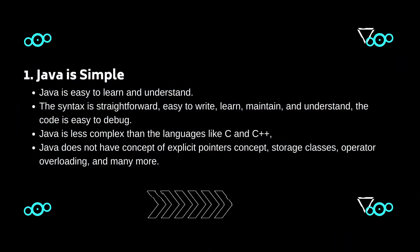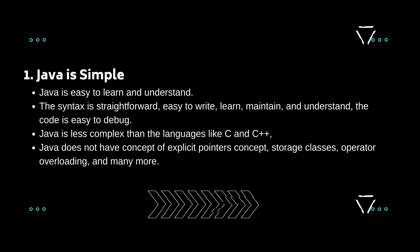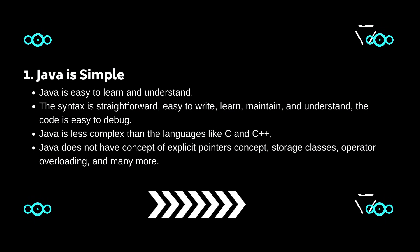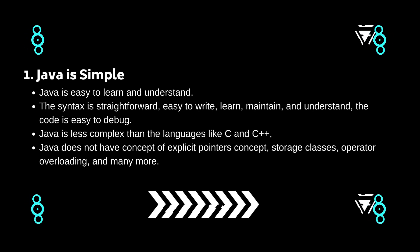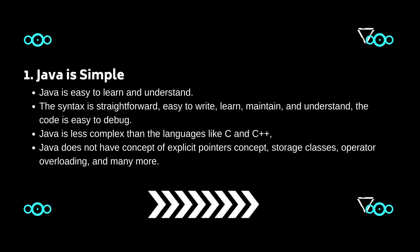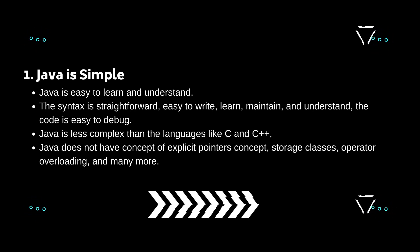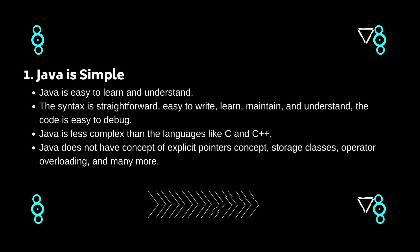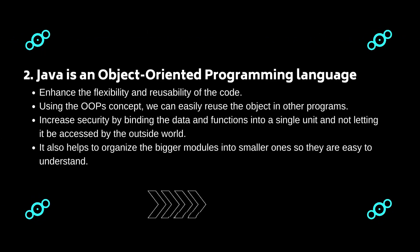One: Java is simple. Any language can be considered simple if it is easy to learn and understand. The syntax of Java is straightforward — easy to write, learn, maintain, and understand. The code is easily debuggable. Moreover, Java is less complex than languages like C and C++, because many complex features such as explicit pointers, storage classes, and operator overloading have been removed from Java.